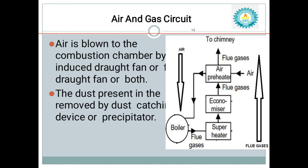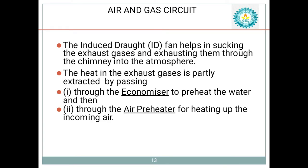Before being sent to the combustion chamber, the air is preheated and dust is removed with the help of dust-catching devices and a respirator. The air preheater is used to preheat the air. The boiler also has devices including an economizer and superheater. In the air and gas circuit, three major devices are important: the induced draft system, the economizer, and the air preheater.